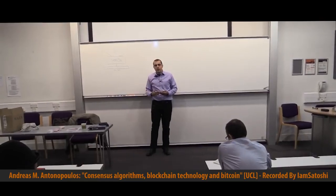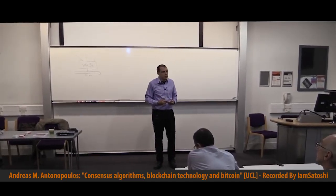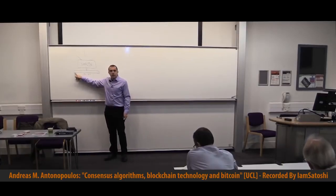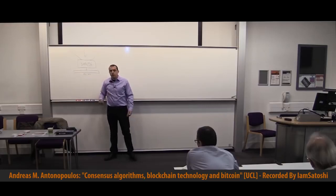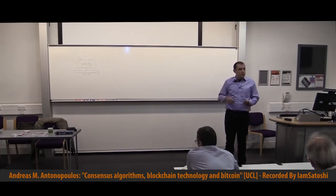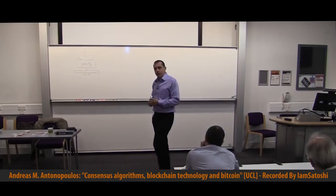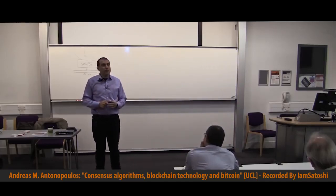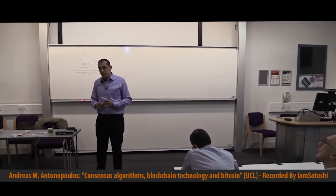Effectively, if you say the first bit is zero, the number has to be less than 2^255. If you say the first two bits have to be zero, the number has to be less than 2^254, and so on. So what I'm saying is: generate a seemingly random number that is smaller than a specific value. That value is called the target. Specifically in Bitcoin, we call it the difficulty target, because the lower that value is, the harder it is to find one of these numbers.